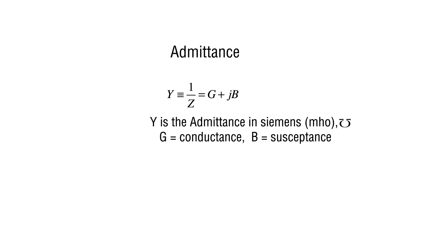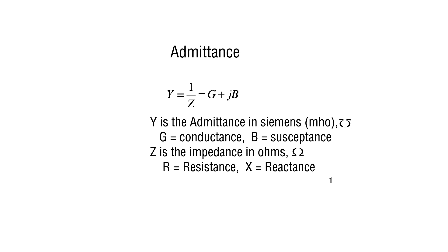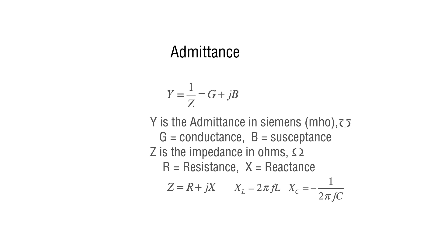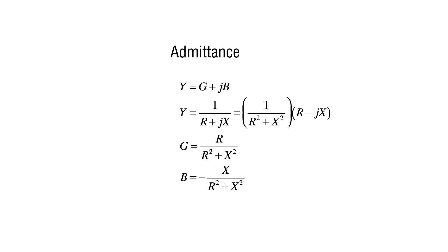As a reminder, let's look at the definitions of the inductive and capacitive reactances. The inductive reactance is positive, but the capacitive reactance is negative. Thus, in the impedance Smith chart, the top half represents inductances and the bottom half represents capacitances. We can calculate both G and B from the resistance R and the reactance X of the impedance.